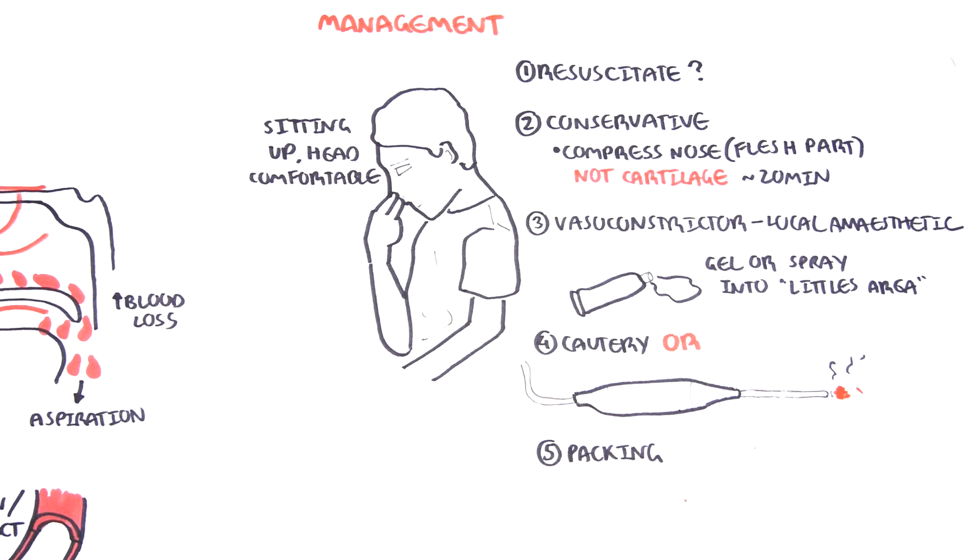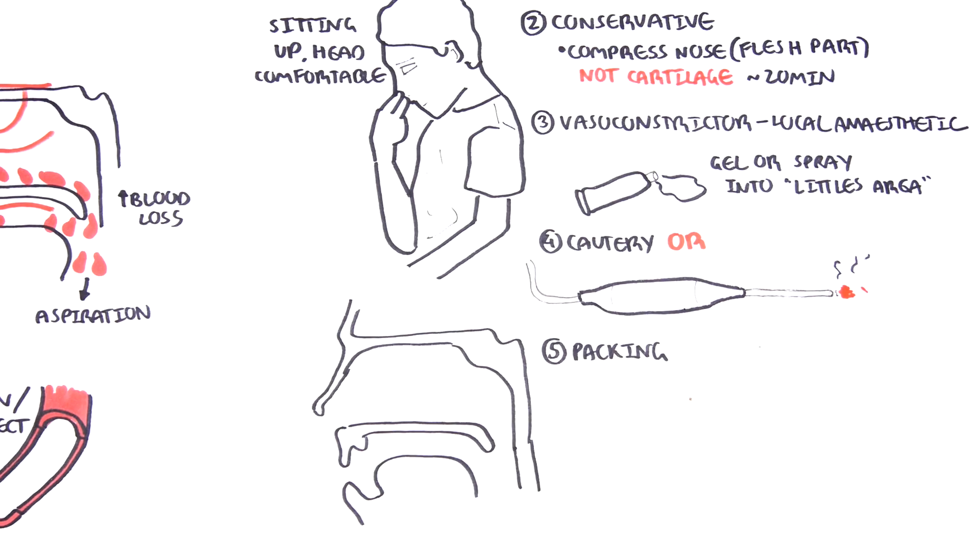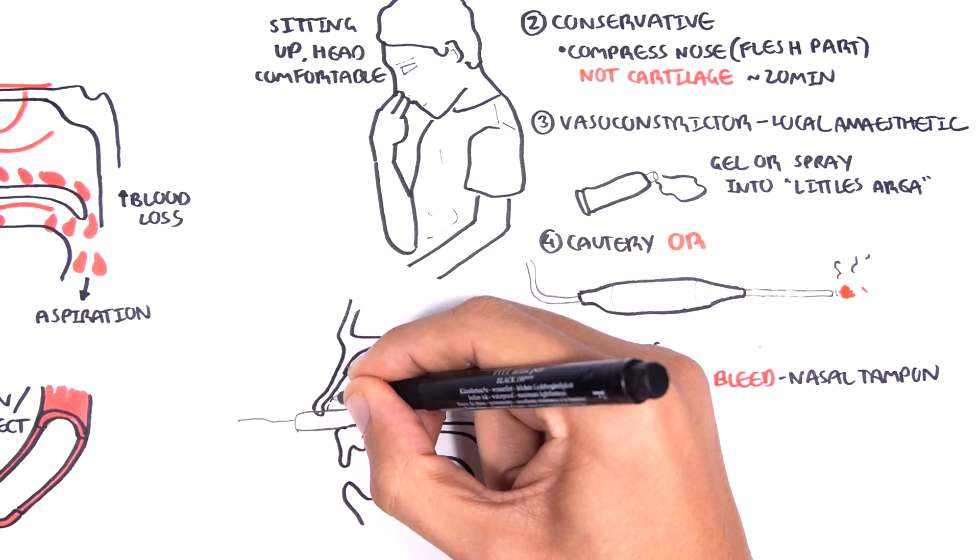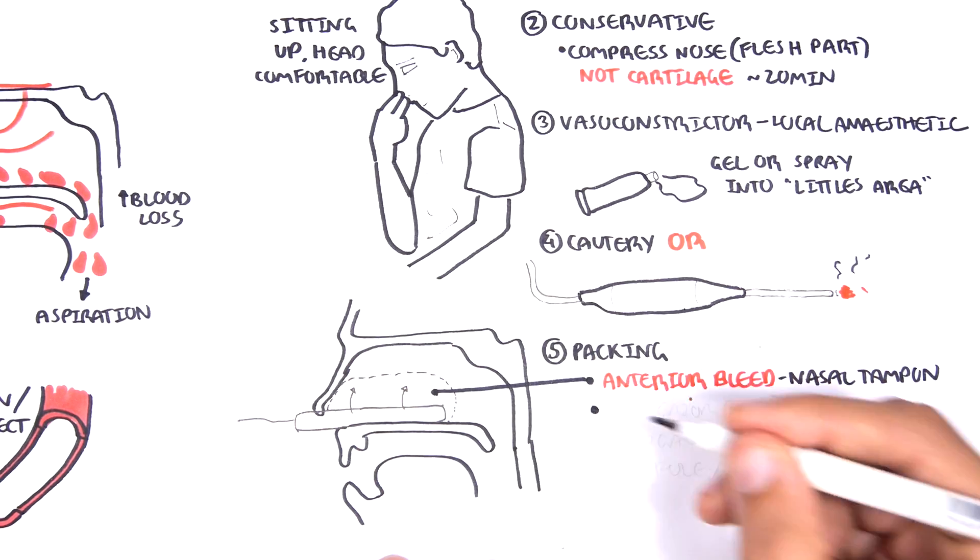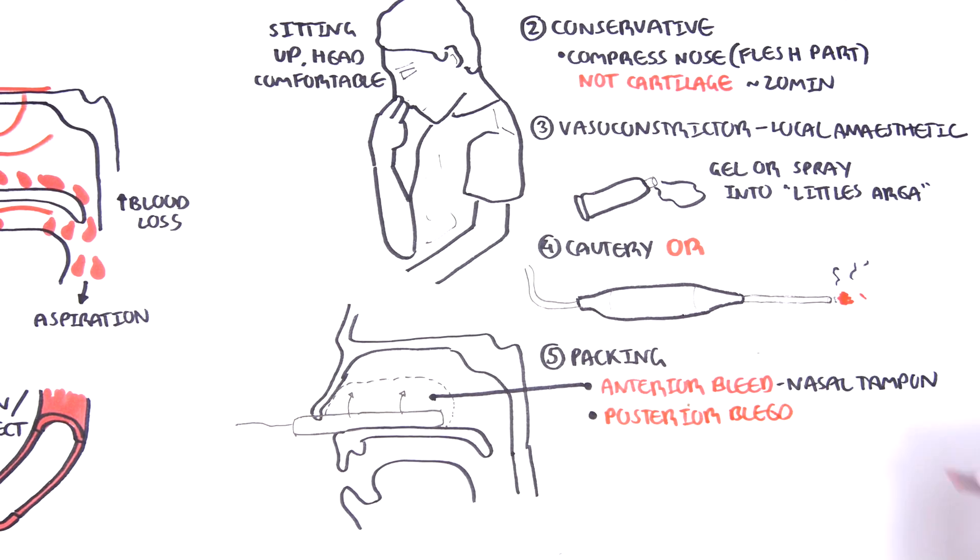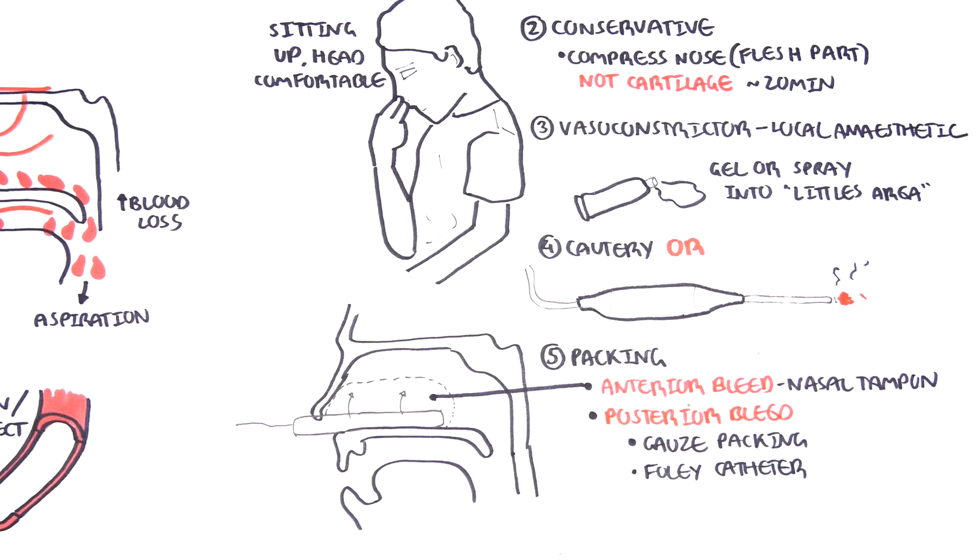For example, in anterior nosebleeds, a nasal tampon can be used. A nasal tampon will essentially expand and absorb all the blood in the area. With posterior nosebleeds, you can pack the nasal cavity with gauze. Or a step up is using a Foley's catheter, which can be useful to stop the bleeding using pressure of a dilated balloon.